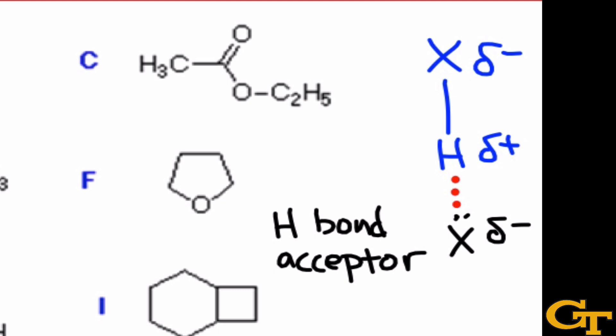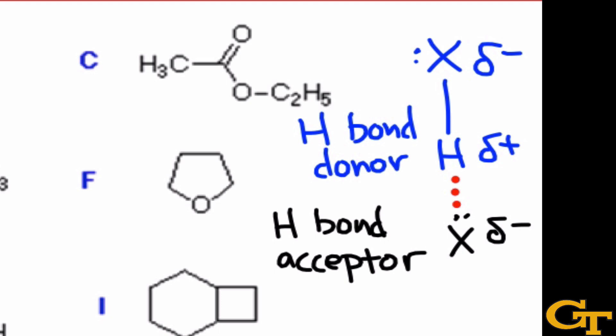Meanwhile, the X-H bond, or the molecule containing the X-H bond, is known as the hydrogen bond donor. In order for a molecule to act as a hydrogen bond donor, it must have this X-H bond. In the vast majority of cases, molecules that contain X-H bonds also contain lone pairs on the heteroatom, and so these can also act as acceptors, though that's not a universal requirement for X-H bonds.